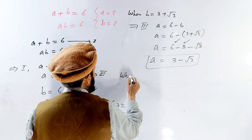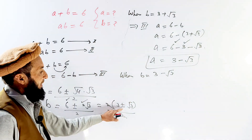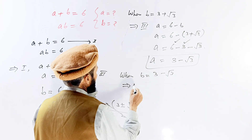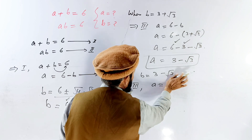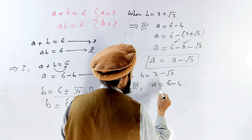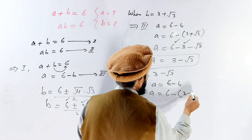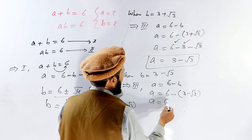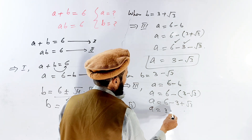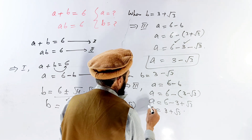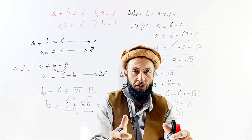When B is equal to 3 minus root 3, equation number three gives A equals 6 minus B, so A equals 6 minus the quantity 3 minus root 3. This gives 6 minus 3 plus root 3, which equals 3 plus root 3. So the two solutions are: B equals 3 minus root 3, A equals 3 plus root 3. Thank you very much for watching, please subscribe to my channel.